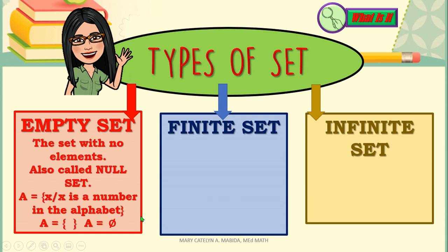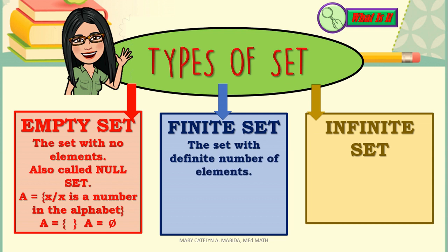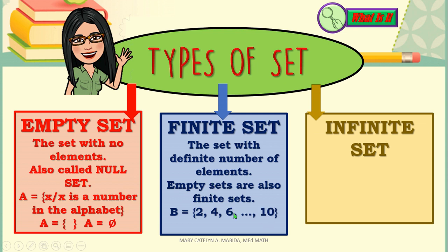Finite Sets are sets with a definite number of elements. Do you know that empty sets are also finite sets? It's definite that an empty set has no element, which is why it is a finite set. The ellipsis here represents the other elements not mentioned in the set, and that element is 8. Therefore, the cardinality of set B is 5. This is a finite set because we know exactly the number of elements in set B.